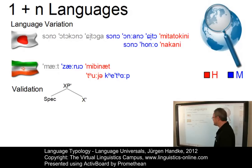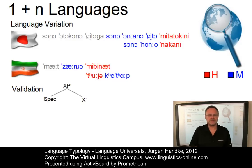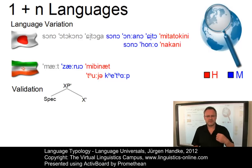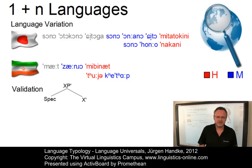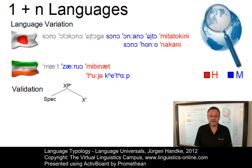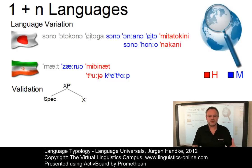A second problem concerns the validation of certain language universals. Often, putative language universals crumble as soon as data from other languages arrives. Take the X-bar syntax scheme as an example — the principle that a phrasal category expands into a specifier and a bar-level category. This scheme was proposed as a universal on the basis of English data, where determiners precede their nouns. Today it is regarded as a general tendency rather than a universal, and surely cannot be validated on the basis of one language alone.